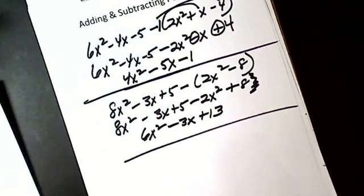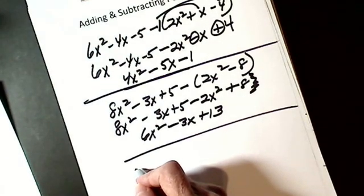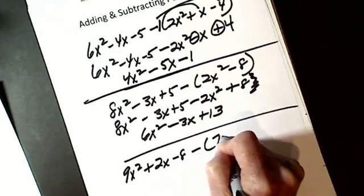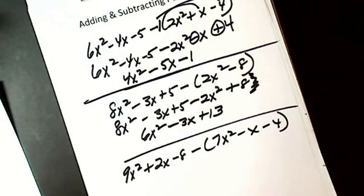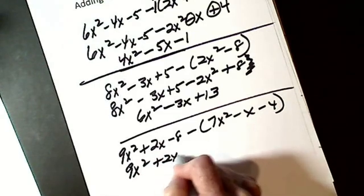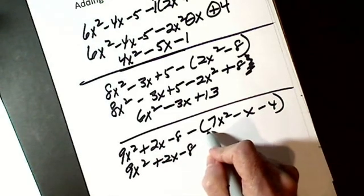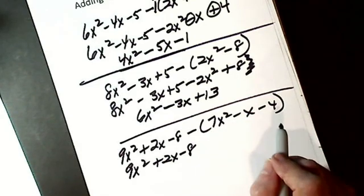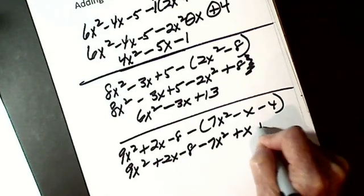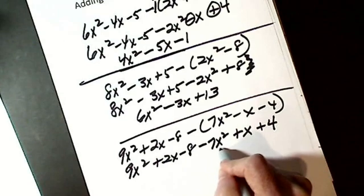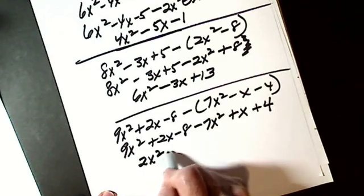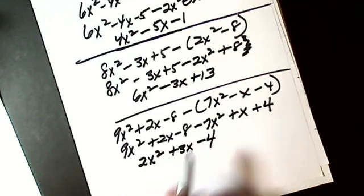We'll do one more, only because so many people get it wrong. And I don't know why. All right, let's say I have one like this. 9x squared plus 2x minus 8 minus 7x squared minus x minus 4. My 9x squared plus 2x minus 8 stays. Minus changes the sign of every single term inside. So I get minus 7x squared plus x plus 4. So make sure you understand why the signs change. Then I just combine like terms. I get 2x squared plus 3x minus 4.